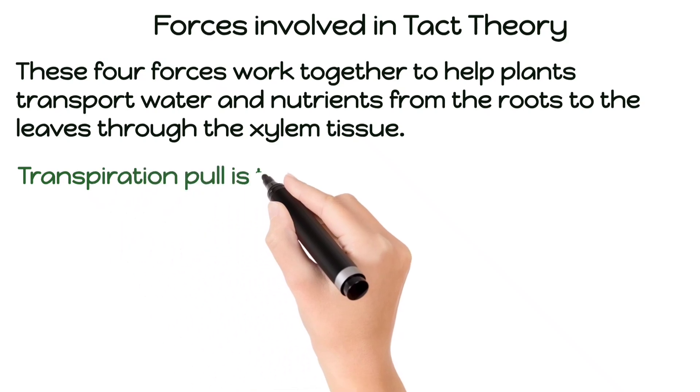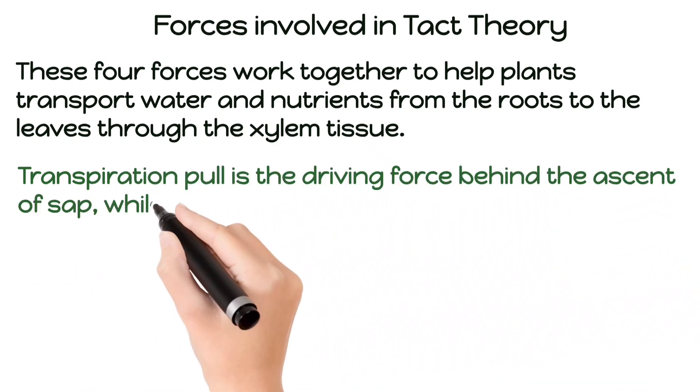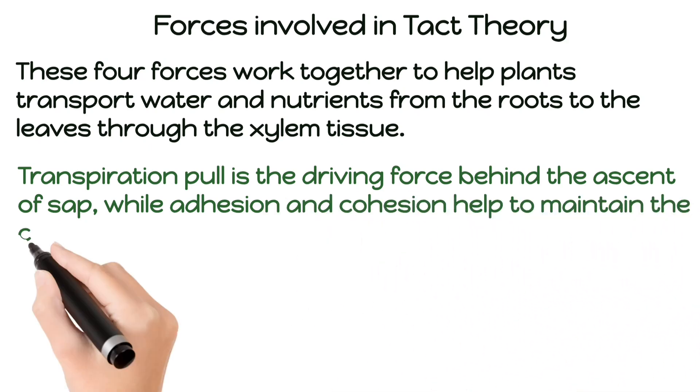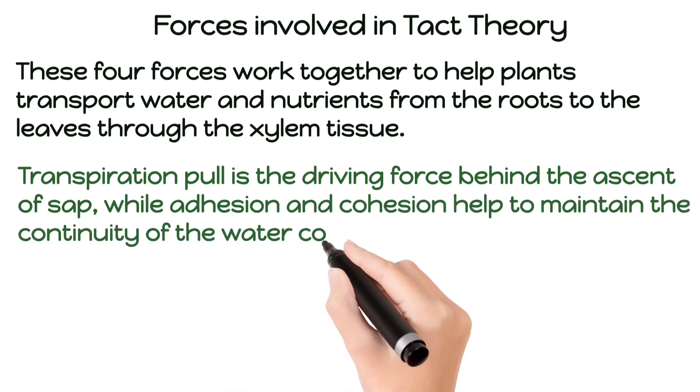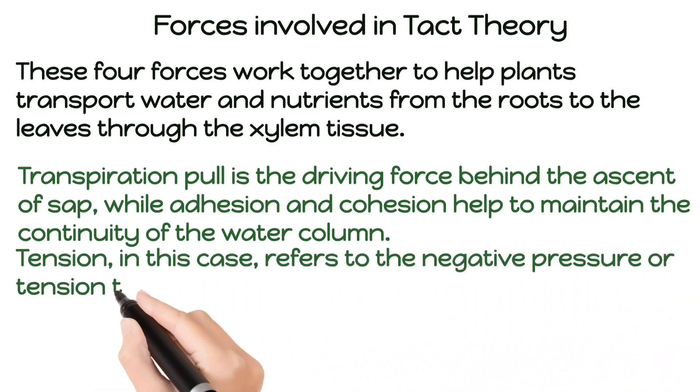Transpiration pull is the driving force behind the ascent of sap, while adhesion and cohesion help to maintain the continuity of the water column. Tension, in this case, refers to the negative pressure or tension that develops in the xylem tissue as water is pulled upwards.